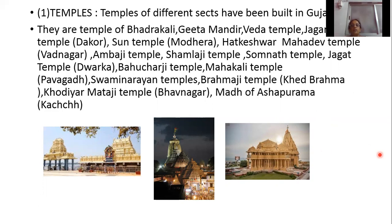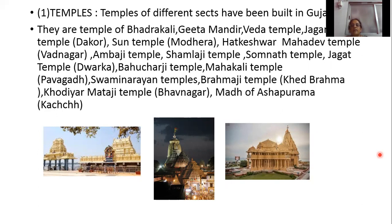For objective questions, note the locations: Jagannath Temple is situated at Dakor; the Sun Temple of Gujarat is at Modhera; the Sun Temple of Karnataka is at Odisha; Hathkeswar Mahadev Temple is at Vadnagar; Somnath Temple is at Dwarka; Mahakali Temple is at Pavagadh; Brahmaji Temple is at Khed Brahma; Kodiyar Madhaji Temple is at Bhavnagar; and Math of Ashapura is at Khed Brahma.